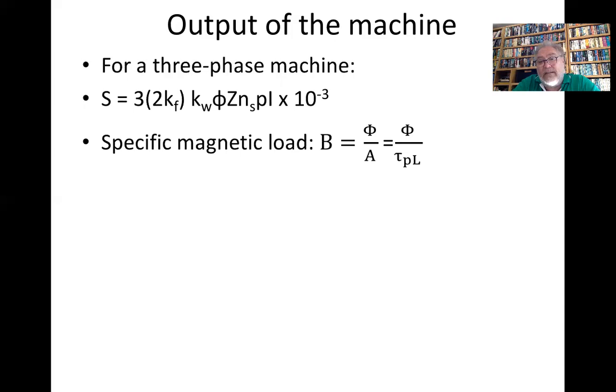Now the specific magnetic load B is equal to the flux over the area, and that is equal to the flux times τ_p times L, where τ_p is the pole pitch. But τ_p is πD over 2p.